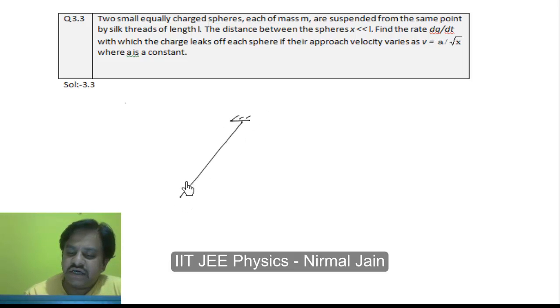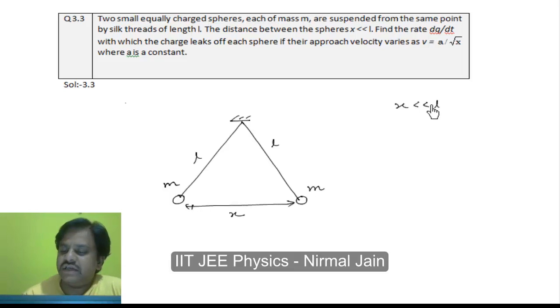The situation must be like that: there is a ball 1, there is another ball 2, both are having same mass M, the length of thread is L. Then it is said that the distance between the two spheres X, which is this.